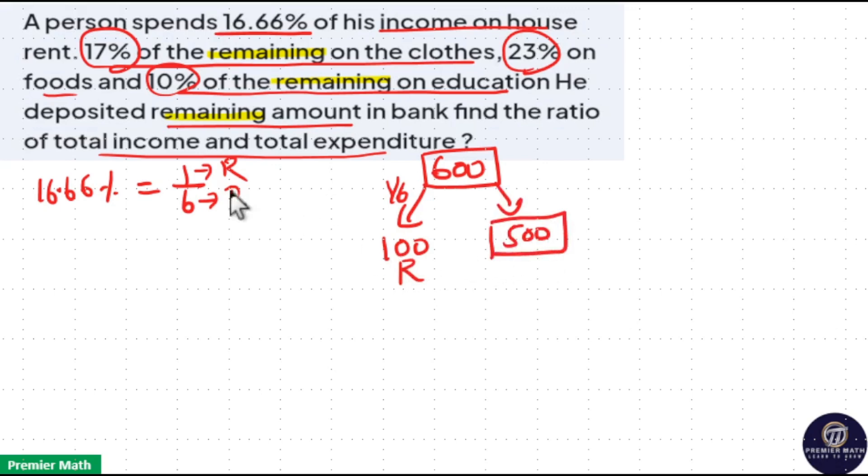Out of this 500 rupees remaining, 17% of the remaining he spent on cloth, means 17% of 500 rupees he spent on cloth, and 23% on food.